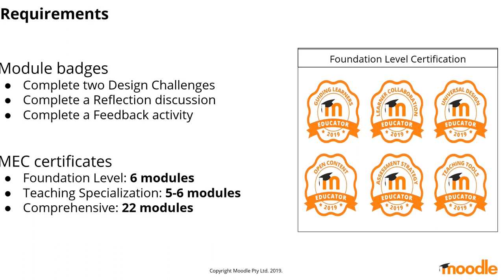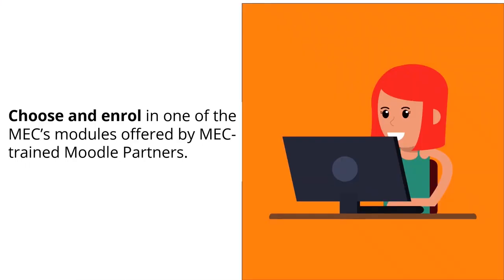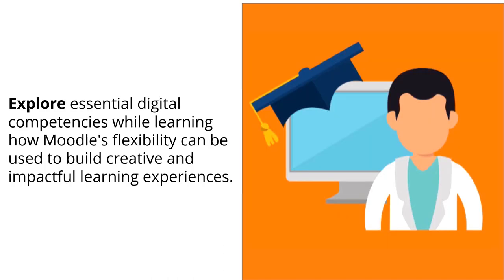So what's it like for the participant? The MEC participant can choose and enroll in a MEC module offered by a Moodle partner — there's no sequential order to the modules. They're all designed to be standalone units, so someone can pick their own pathways and choose which modules they want to take. Next, they explore the essential competency. Each module has a section where we explain the learning outcome, the goal of the module, and provide resources and examples of how one could implement it in Moodle, including step-by-step instructions.